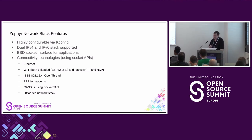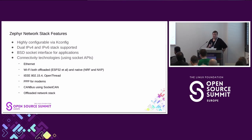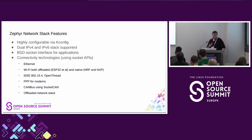For IoT use cases, there's support for 802.15.4 together with OpenThread. For modem usage, there's PPP support, but modems are actually handled by the modem subsystem, not really in the networking subsystem. For CAN-BUS, your application could use the socket CAN API, which is the BSD socket API, or the native socket CAN-BUS APIs if needed.